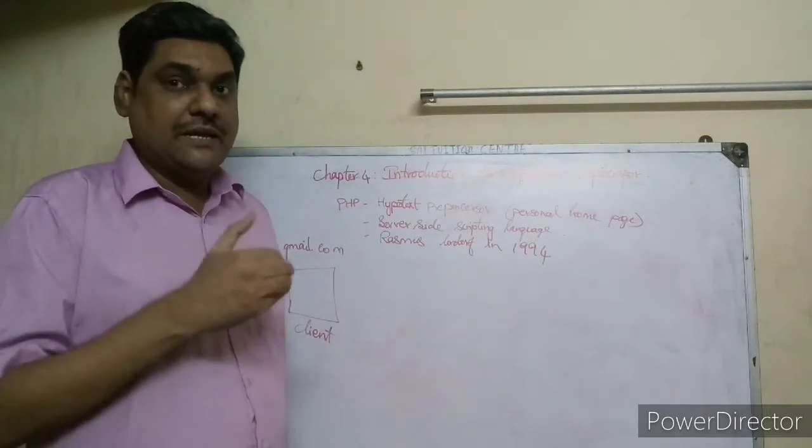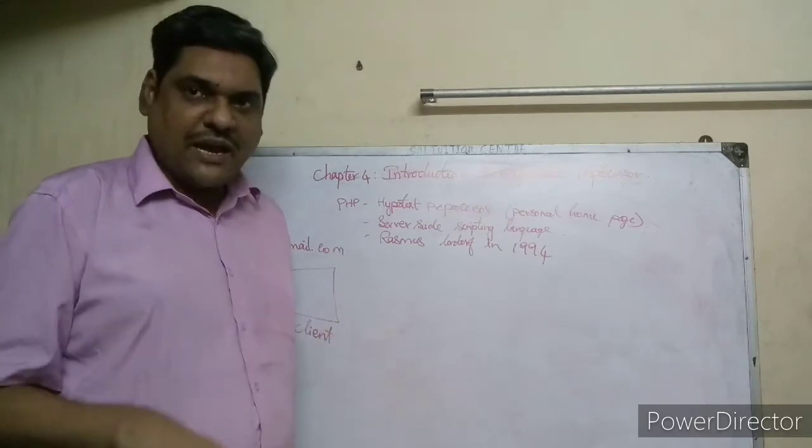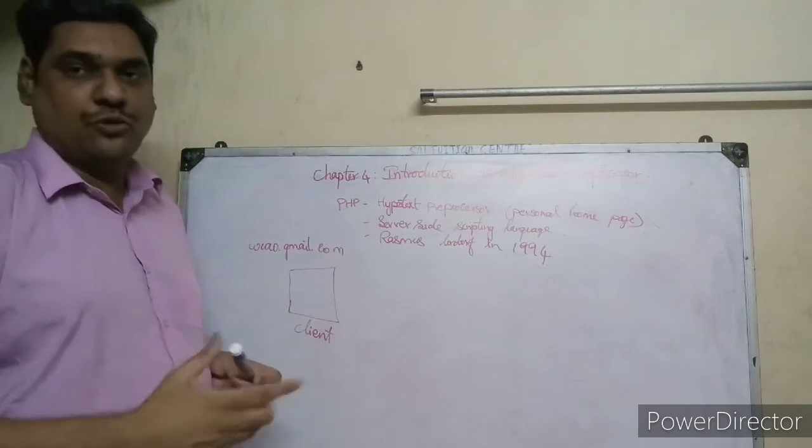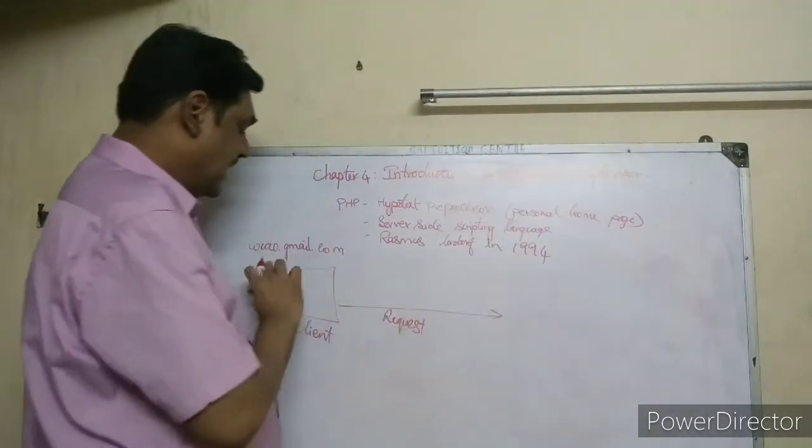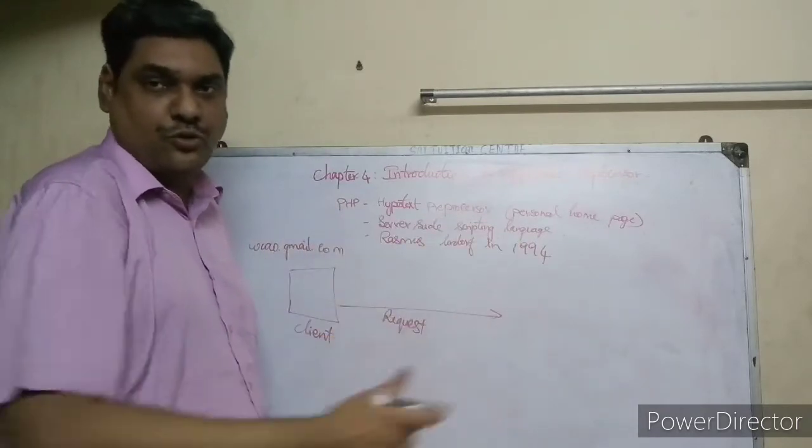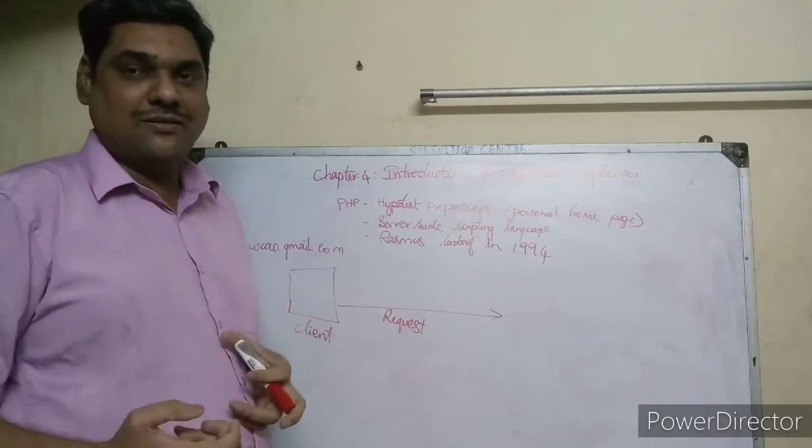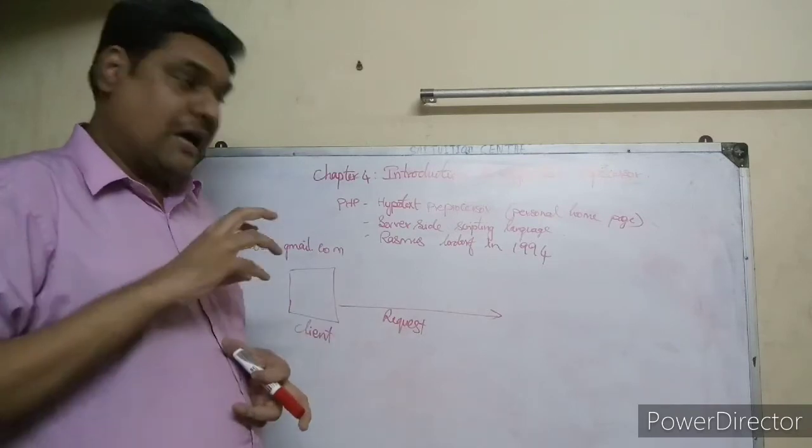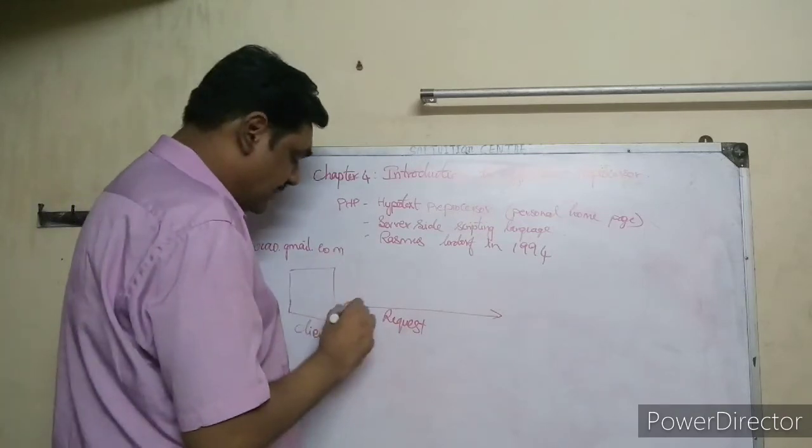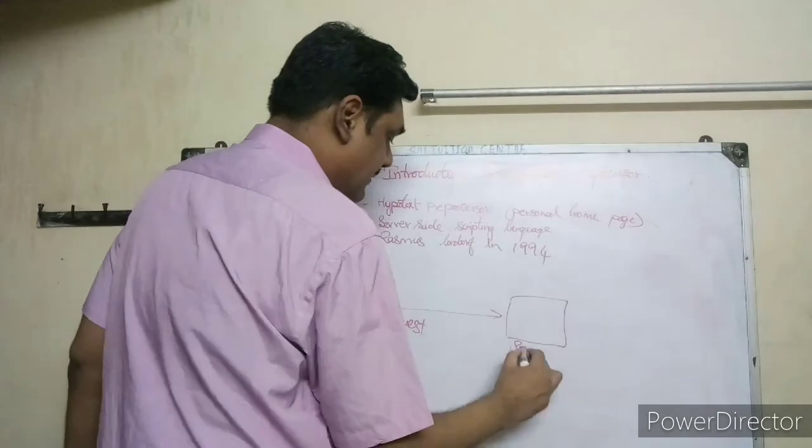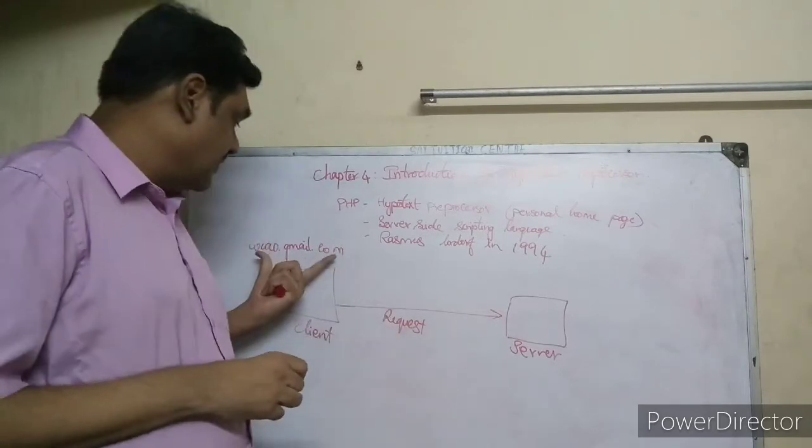First it checks in cache memory if the website is there. If you are visiting the website for the first time, it's not in cache memory. So the website request goes to the server where the website is stored. There is a domain naming system and domain name servers, as you learned in computer networks chapter.